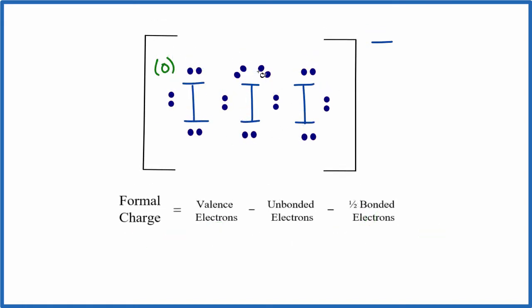For the iodine in the center, we have 7 valence electrons. And then unbonded, we have 2, 4, 6 of those. And we're going to subtract the bonded, which is 2, 4.